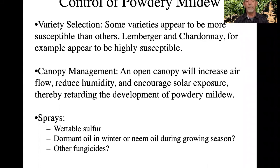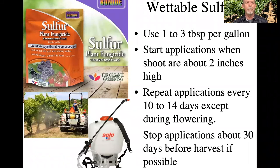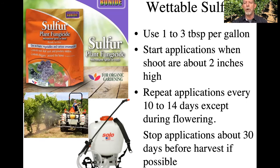All we've used is wettable sulfur at our vineyard, and it's been very effective as long as you get sprays out in the early part of spring. The wettable sulfur I like to use is made by Bonide — you can get it on Amazon and it works very effectively, though there are other wettable sulfurs out there. You can use it in a tractor or backpack sprayer. The recipe is one to three tablespoons of wettable sulfur per gallon. I generally use one tablespoon because in our dry climate we don't have too severe a problem, but if powdery mildew has gotten out of hand, raise it to three tablespoons per gallon. Start applications in early spring when shoots are just beginning to grow about two inches high, as temperatures of 50 to 60 degrees Fahrenheit are optimum for powdery mildew growth.